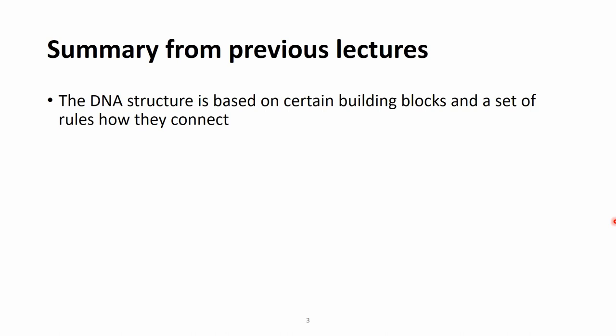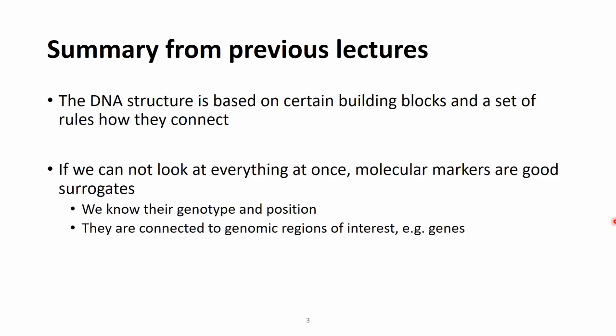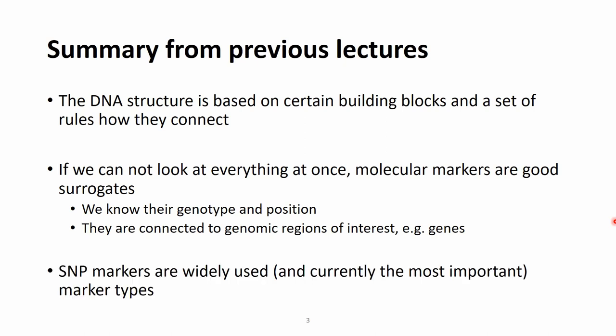We talked about the DNA and its structure that is based on certain building blocks and the set of rules how these building blocks connect. We also established that if we cannot look at everything at once, molecular markers are good surrogates because we know their genotype and their exact position on the genome, and they are connected to genomic regions of interest, for example genes that influence the traits we are interested in. The most widespread ones are the so-called SNP markers.